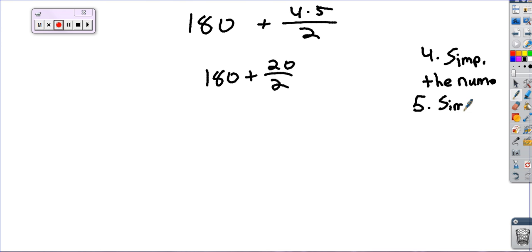We're going to divide. Actually, what we're going to do is we're going to simplify the fraction, which is 20 divided by 2 is 10. So that's 180 plus 10. Your sixth step, your final step, is to add. Answer 190.